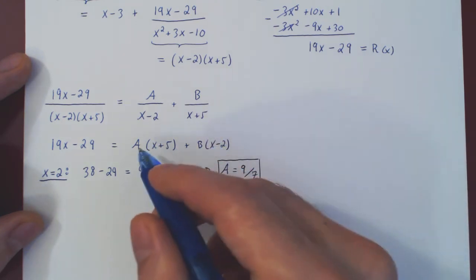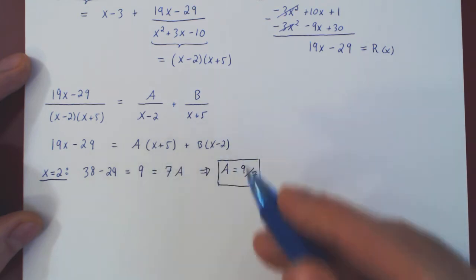Well, to isolate for B, we will eliminate A by choosing x to be negative 5.